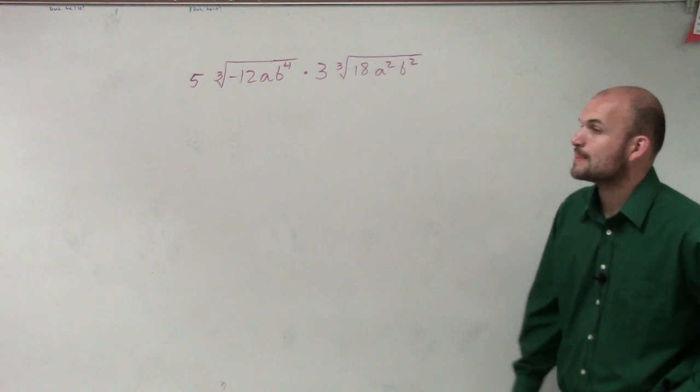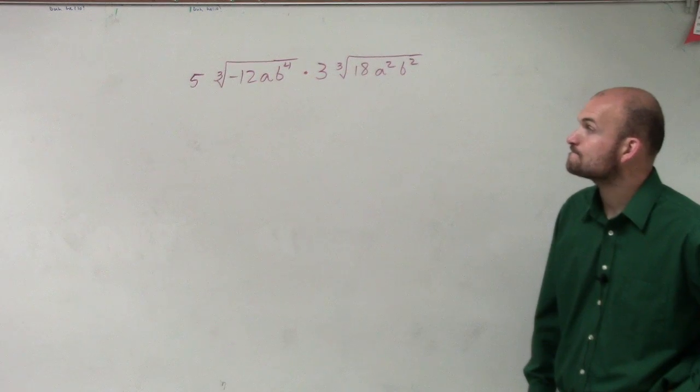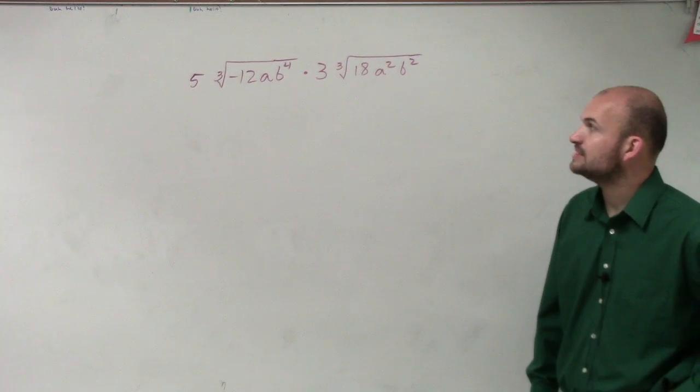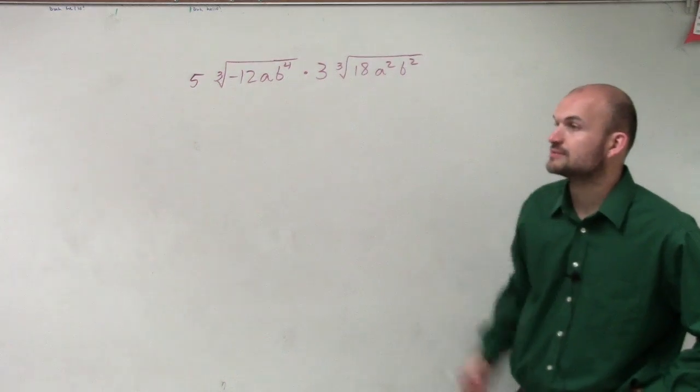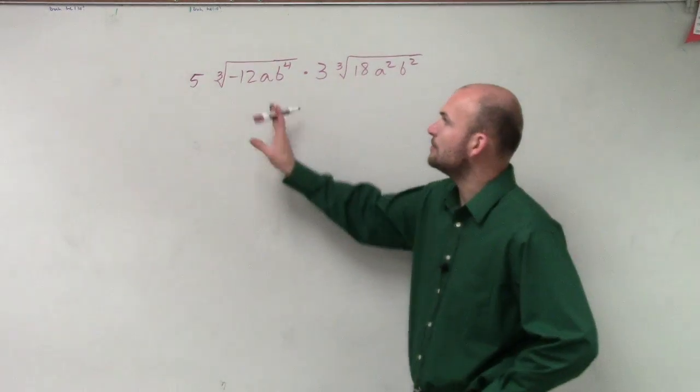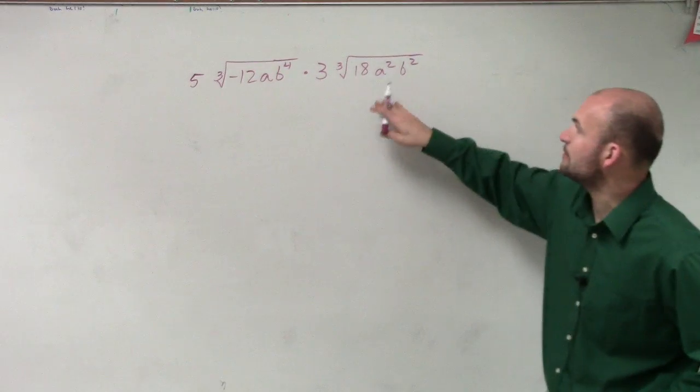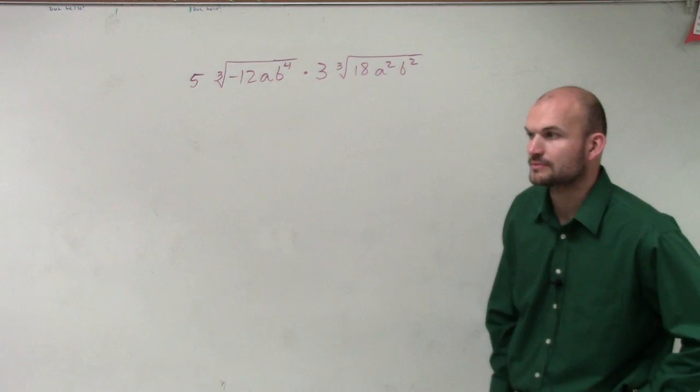You could do b times b to the third. What's b times b times b times b? You could rewrite that as b cubed, yes. You could write that. So that one you could write right there. But these two you could not, right? No. OK.